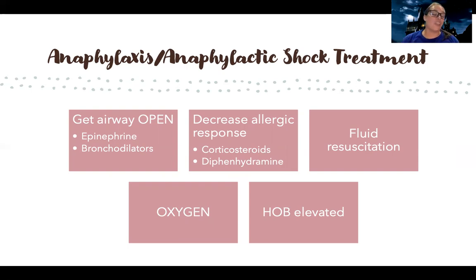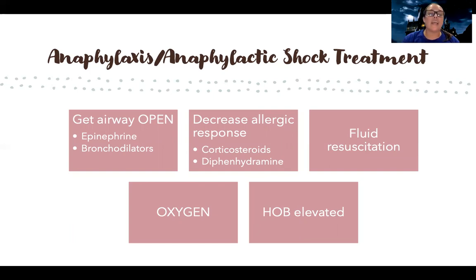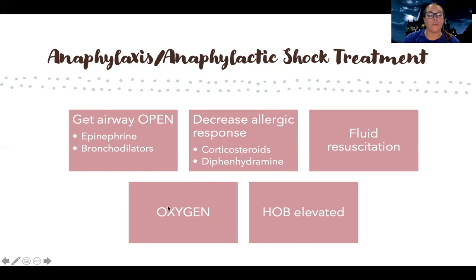Then I need to start loading them up with stuff to decrease the allergic response — corticosteroids and diphenhydramine, which is an antihistamine. Their blood pressure is going to be low due to that vasodilation, so I'm probably going to need to give them fluids to help increase their blood pressure. If their oxygen levels are low, oxygen is needed — most people with anaphylaxis need some sort of oxygen treatment. Sometimes they even have to have a breathing tube to help support them, and put the head of bed up to support their airway and breathing.